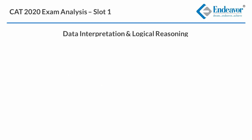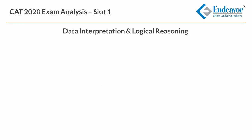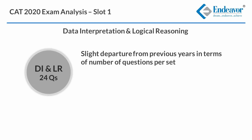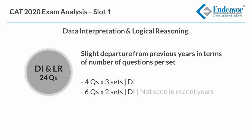DILR sectional showed a slight departure from previous years in terms of number of questions per set. This sectional had a total of 24 questions with 3 sets of 4 questions each. A set with 6 questions hasn't actually been seen in recent years, so this was quite new.